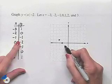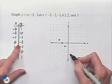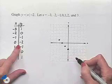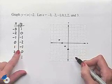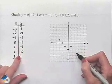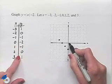0 negative 2, we move down on the y-axis two units and plot the point. 1 negative 1, move over to the right one and down 1.